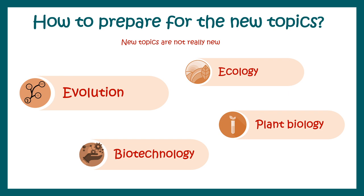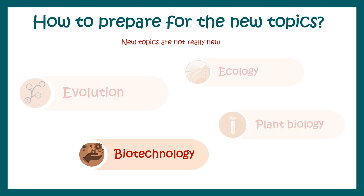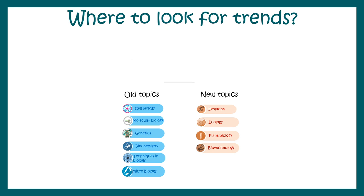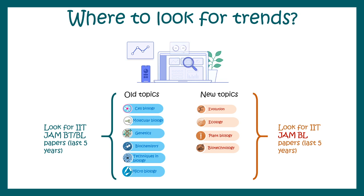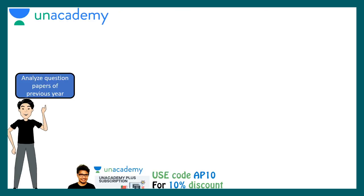You already know how to prepare for conventional topics already in IIT JAM — I have a video on that. The new topics are evolution, ecology, biotechnology, and plant biology. These are not really new additions but extensions, because evolution, ecology, and plant biology were already part of the IIT JAM BL paper, which was discontinued in the last two years. What is really new is the biotechnology section. For old topics, look at IIT JAM BT or BL papers; for the new topics, look at BL papers from 2015 onward and analyze the trends.